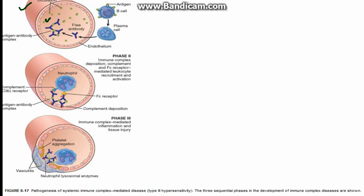This is the antigen. Now, in response to this antigen, the B cell is converting into plasma cell and further the plasma cell is producing antibody. This antibody combines with this antigen to form antigen-antibody complex, that is the immune complex. In the second phase, this immune complex gets deposited over a host tissue and further recruits many leukocytes, activates them, and in the third stage, the immune complex mediated inflammation and tissue injury is seen.